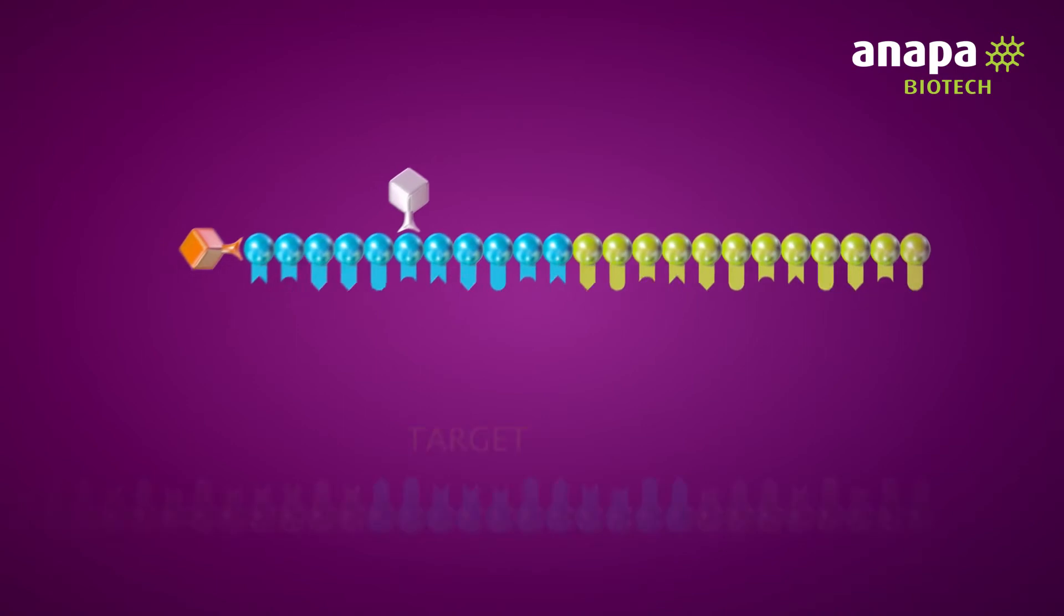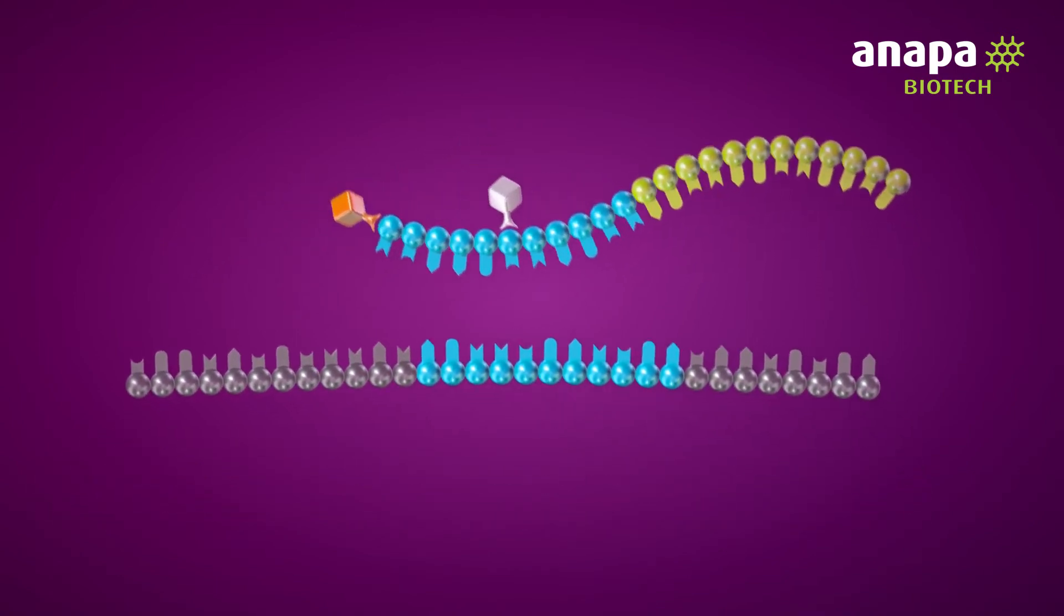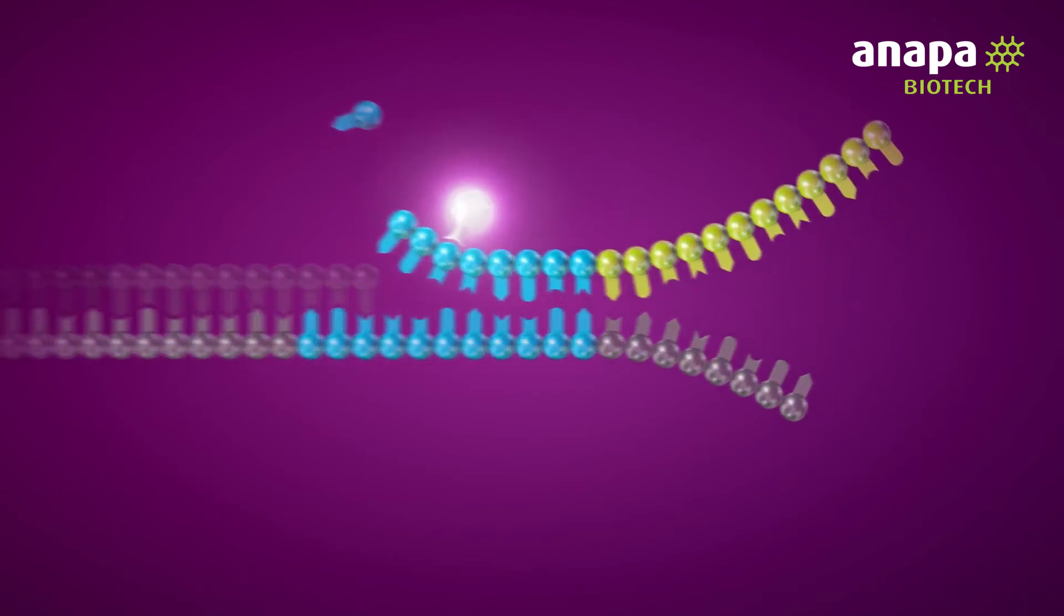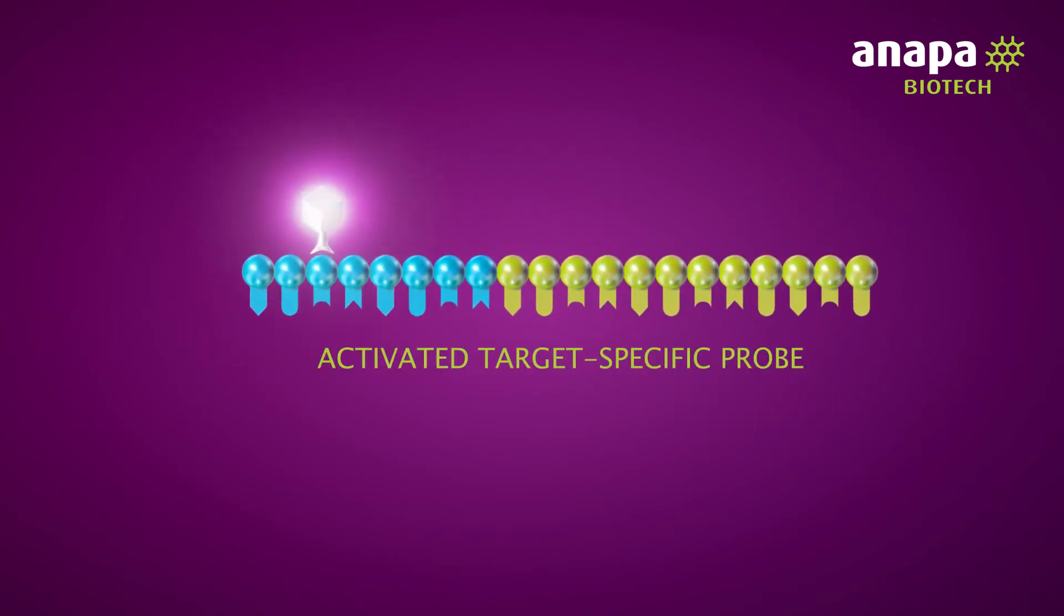If the probe target is present, the probe binds to the target region and the 5' quencher is released by the advancing polymerase during PCR amplification. This leaves an activated target-specific probe.